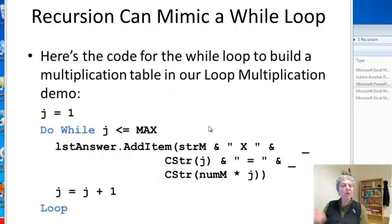So one way to get started looking at recursion is to notice that recursion can mimic a while loop. Here I have a while loop that does a multiplication table, and it's pretty straightforward. So we have a loop control variable called j. We started out at 1, and while j is less than or equal to max, what we do is we print whatever our item is in a string form, the time sign, the value of j,